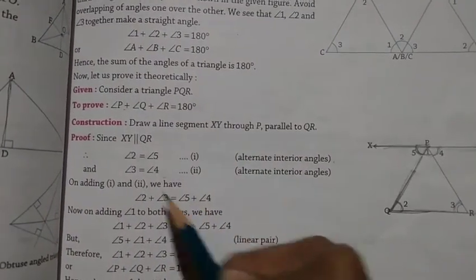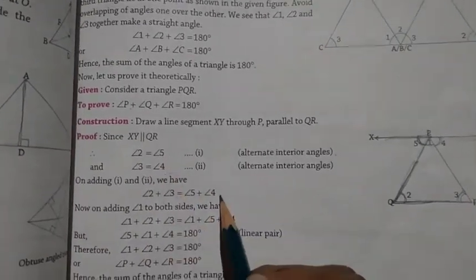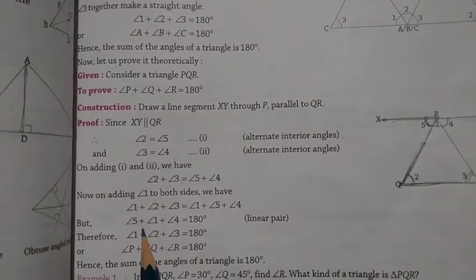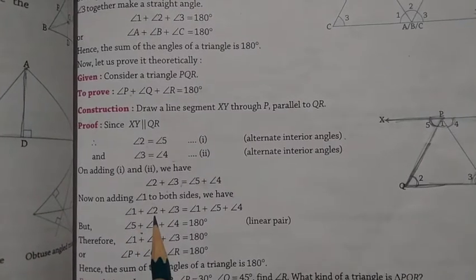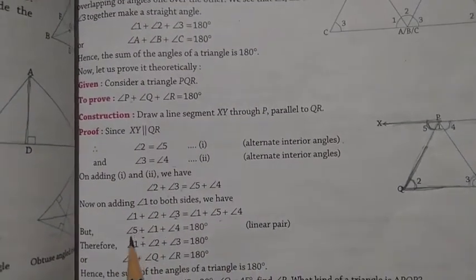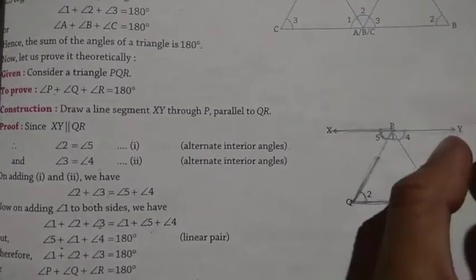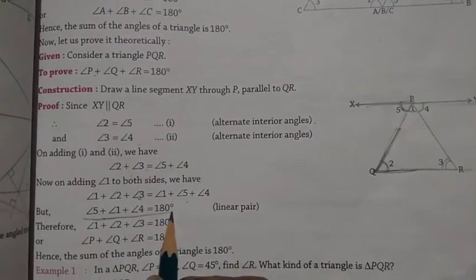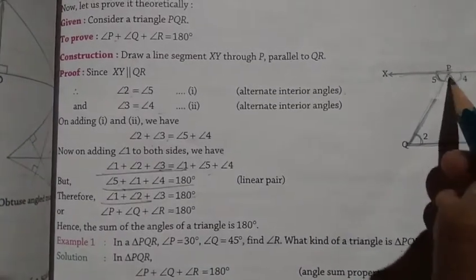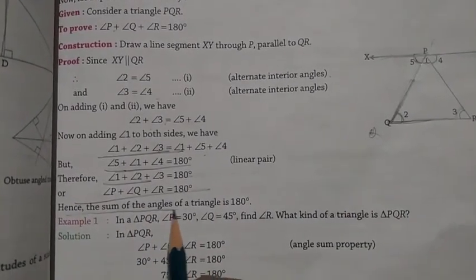Now adding angle 1 to both sides: angle 1 plus angle 2 plus angle 3 equals angle 1 plus angle 5 plus angle 4. But angle 1, angle 5, and angle 4 form a linear pair, which equals 180 degrees. Therefore angle 1 plus angle 2 plus angle 3 equals 180 degrees, where angle 1 corresponds to P, angle 2 to Q, and angle 3 to R. Hence the sum of angles of a triangle is 180 degrees.